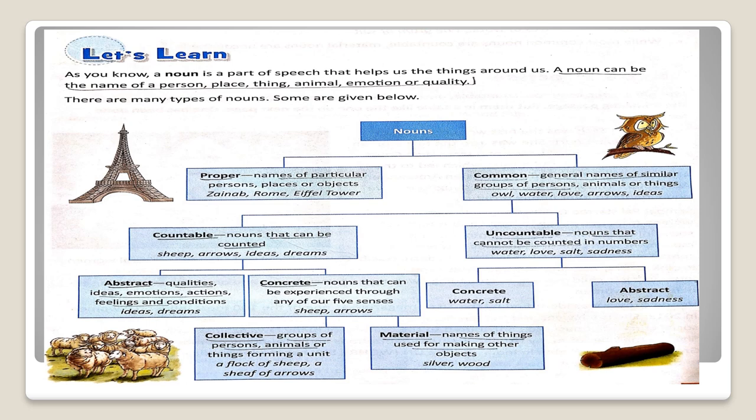Countable noun. Nouns that can be counted. For example, Sheep, Arrows, Ideas, Reams. Uncountable nouns. Nouns that cannot be counted in numbers. Water, Love, Salt.